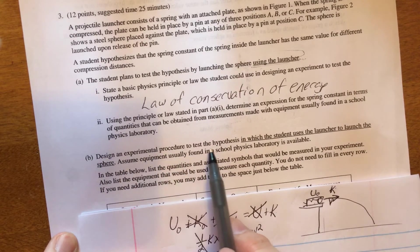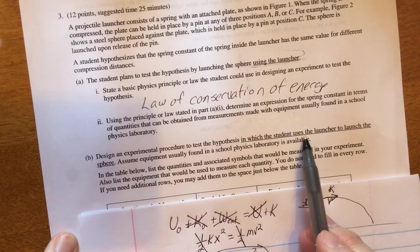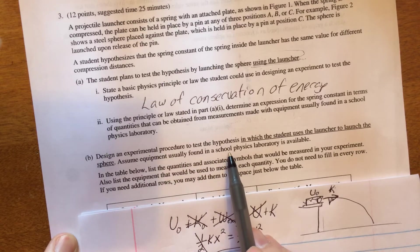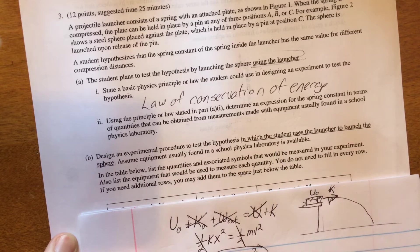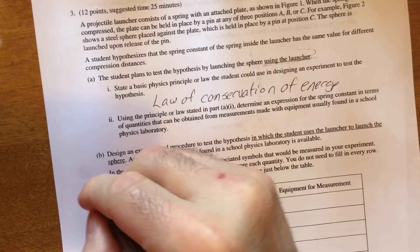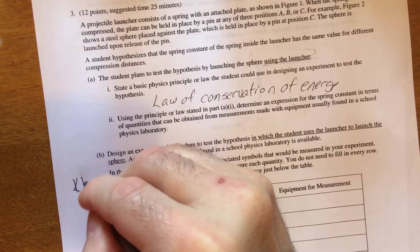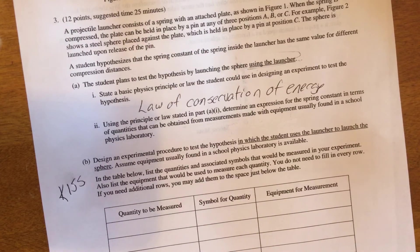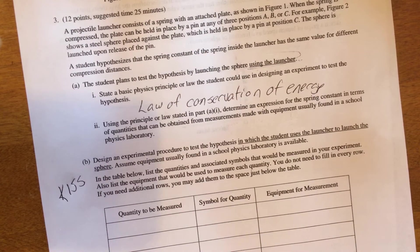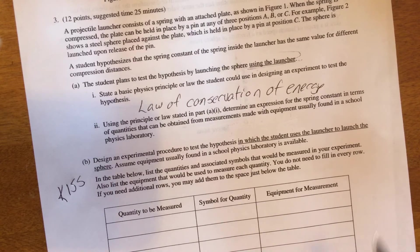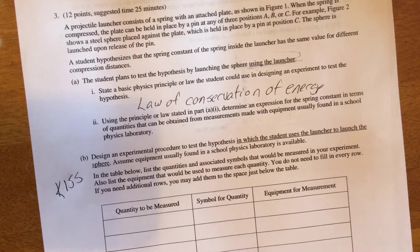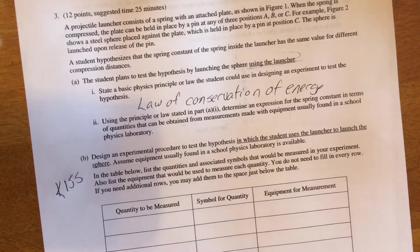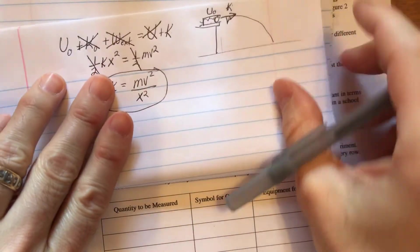So we want to design an experimental procedure to test the hypothesis in which the student uses the launcher to launch the sphere. Assume equipment usually found in a school physics laboratory is available. Again, guys, please use the KISS principle. Keep it simple, stupid. Just don't come up with any exotic materials or equipment. Just stuff like meter sticks, for example. Let's look at my setup. What can I actually measure here?